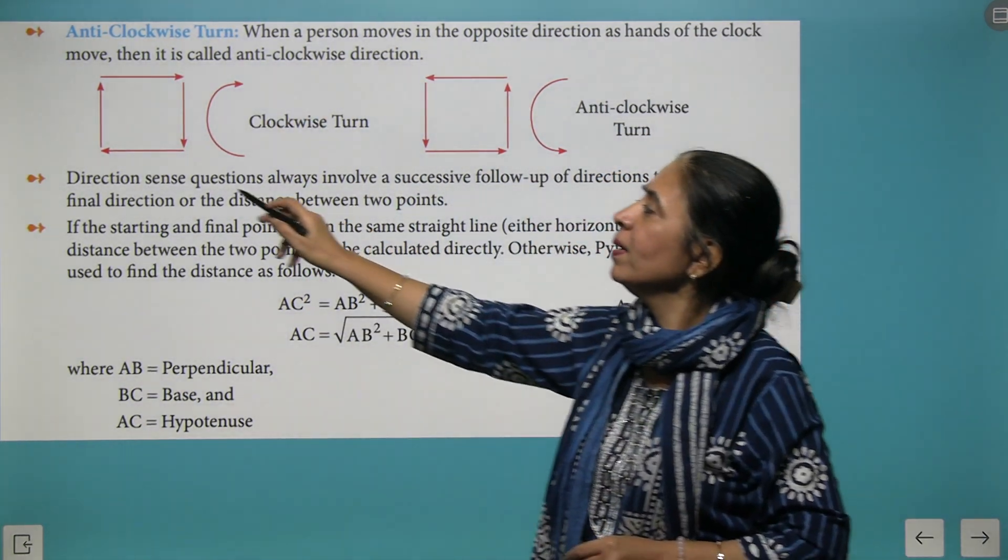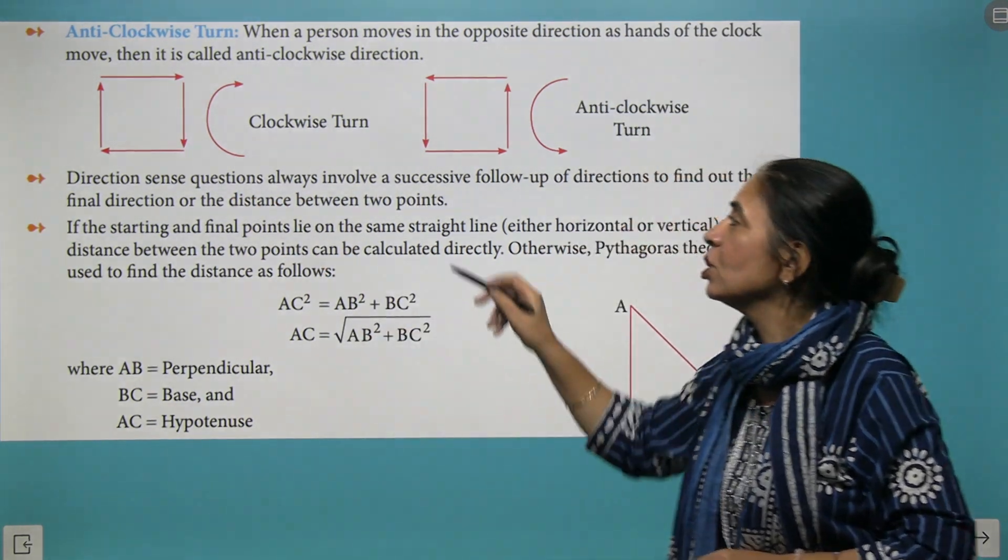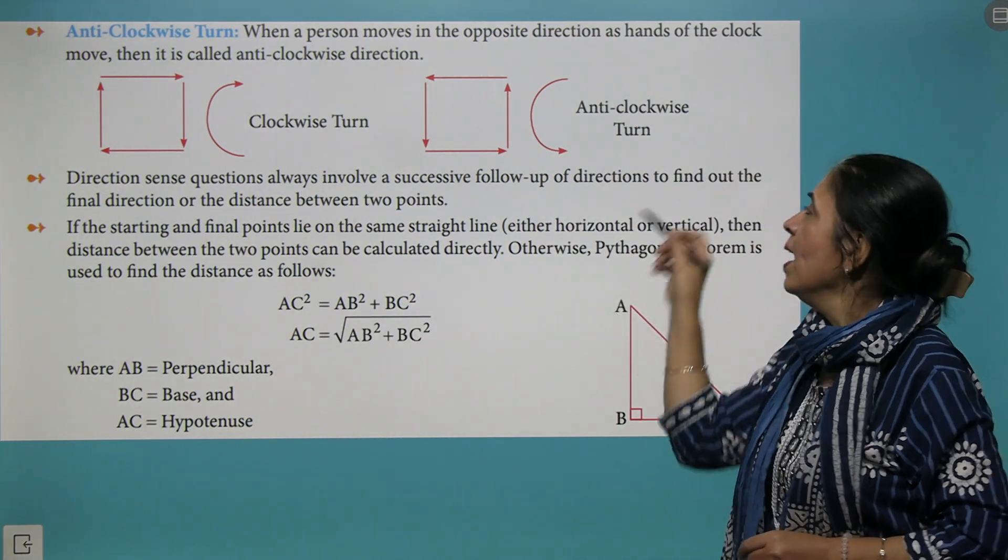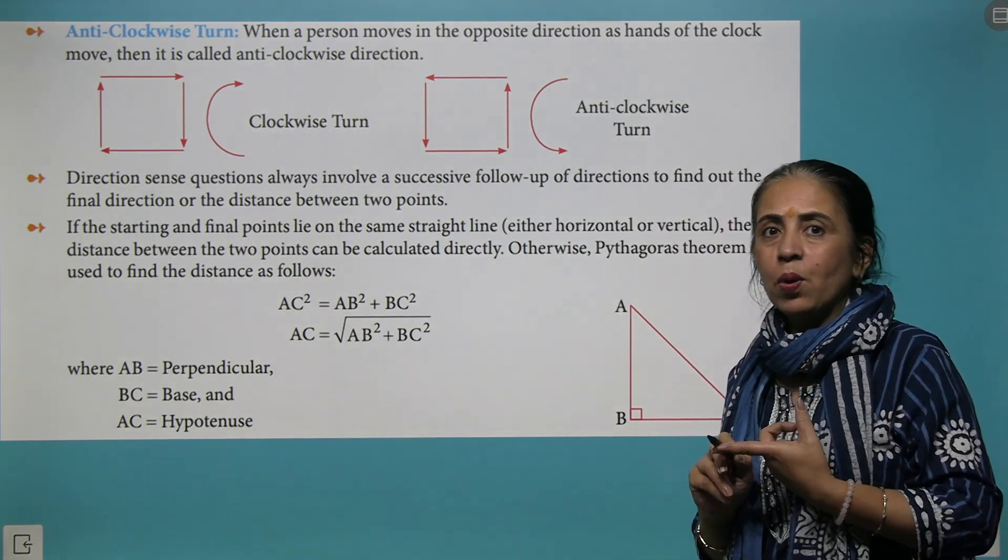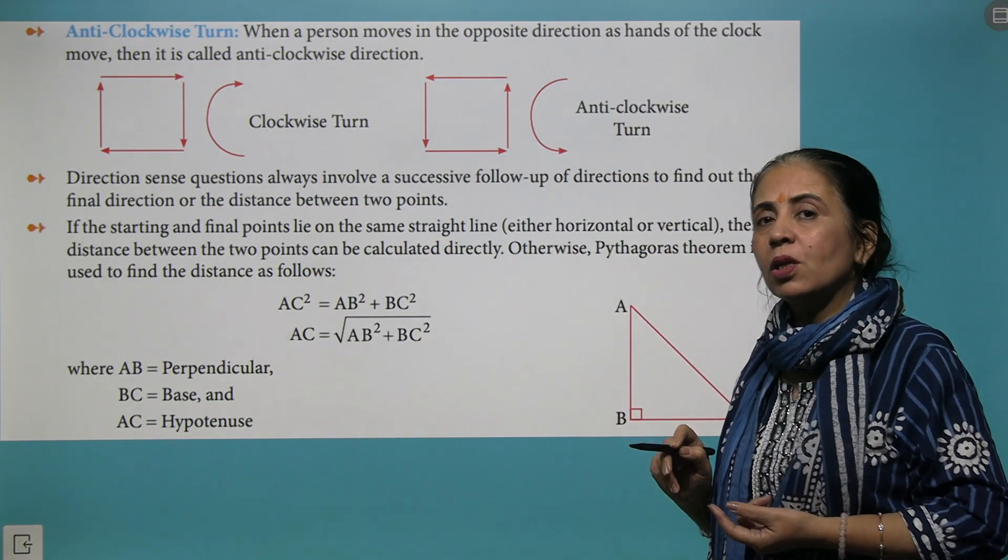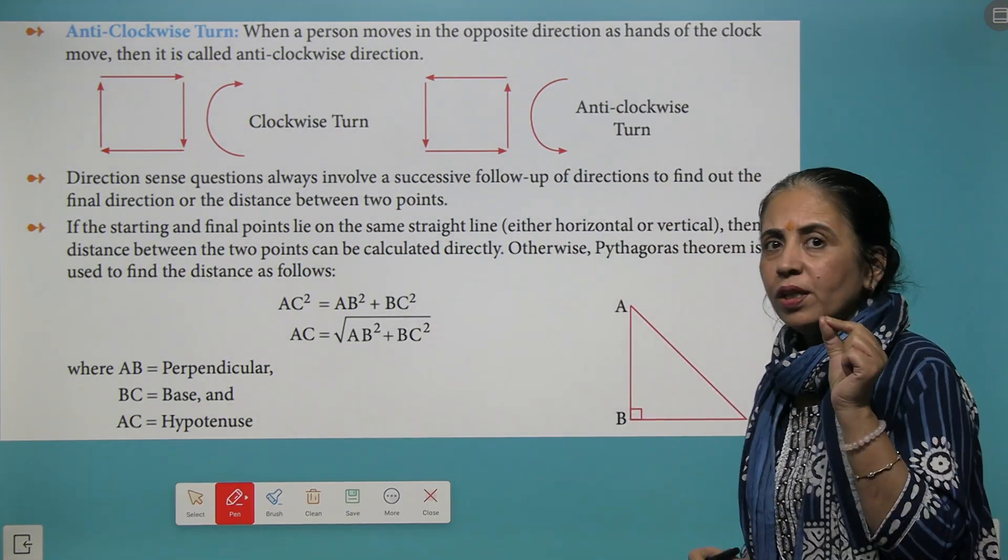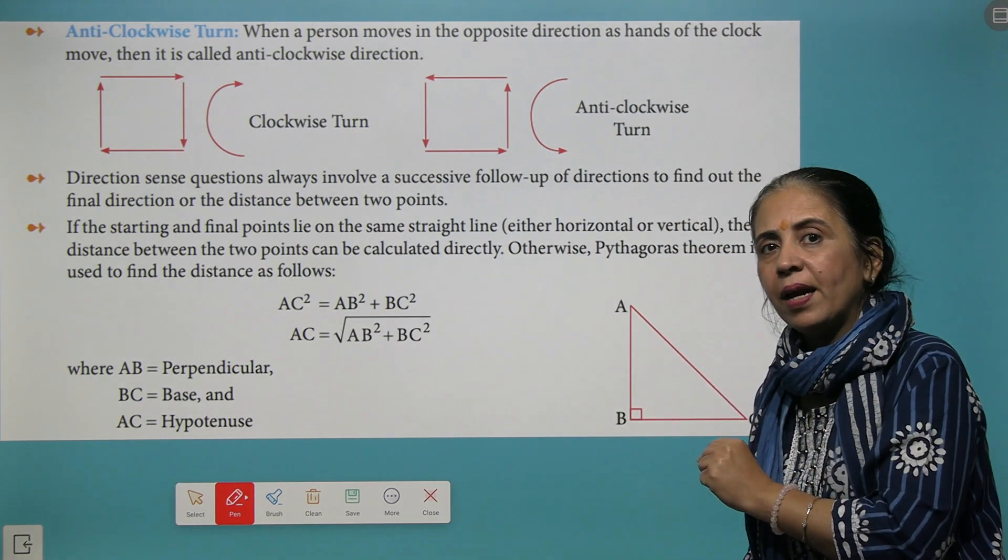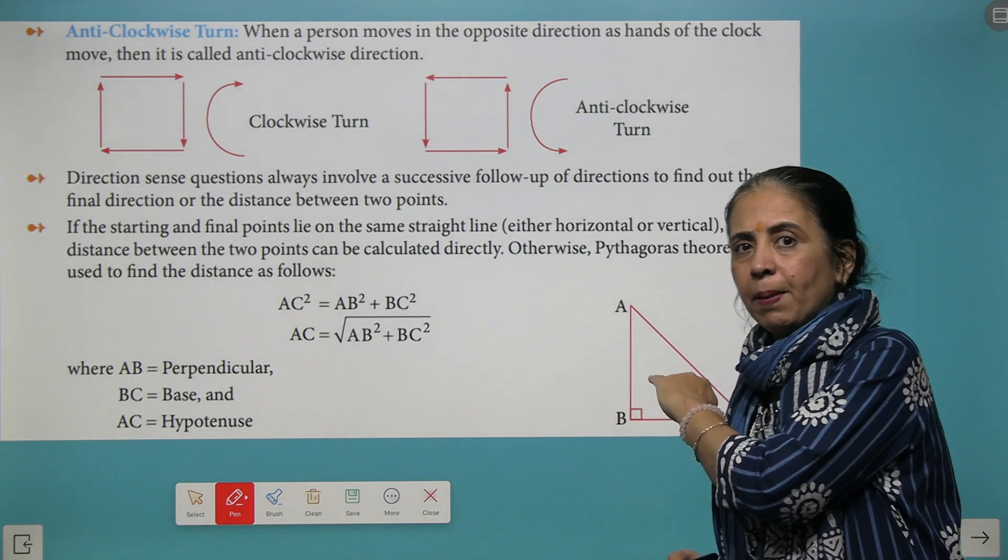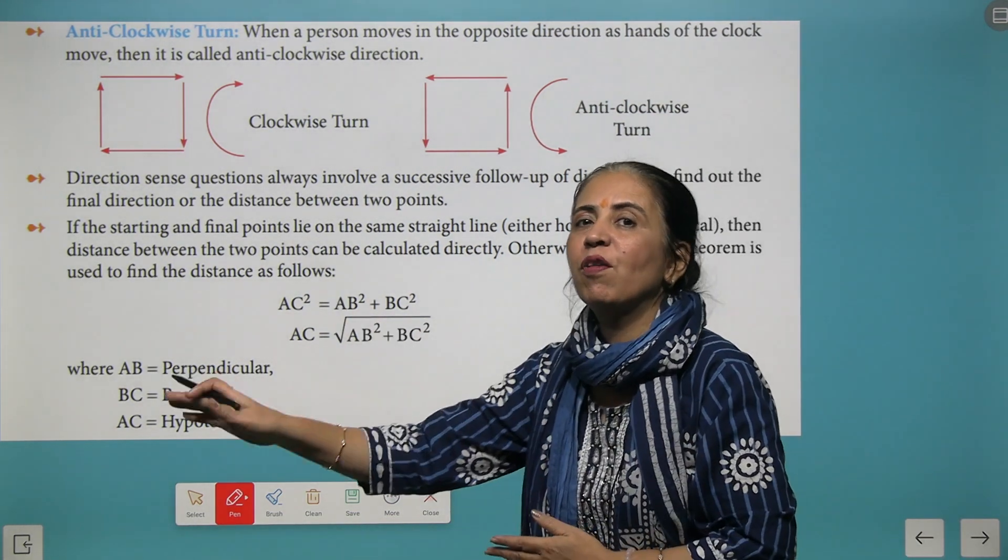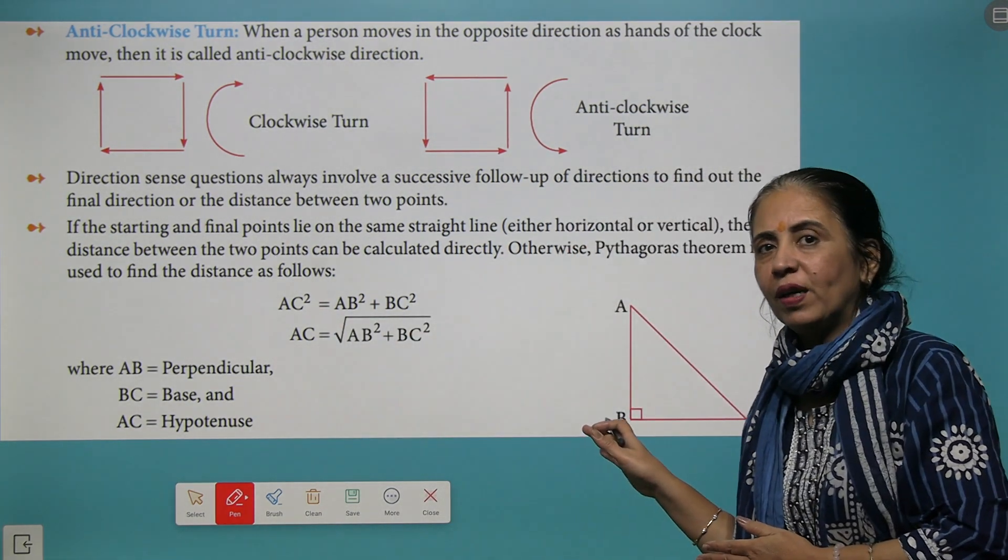Direction sense questions always involve a successive follow-up of the direction to find the proper direction and the distance between two points. Very important thing to remember: if the starting and ending point are in the same line, it can be calculated directly by finding the difference of the distance.